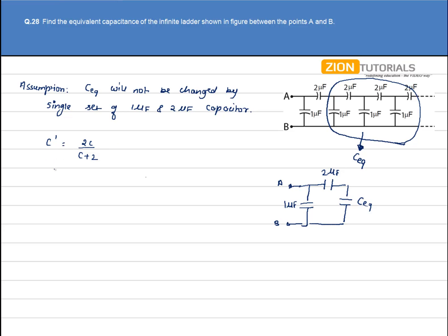Now C prime is in parallel with 1 microfarad, so we get C equivalent, the net capacitance of the whole circuit, is equal to 1 plus 2C equivalent divided by C equivalent plus 2. This C is also equivalent, this C is also equivalent.